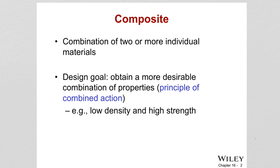Modern technologies require unusual combinations of conventional materials. The question is why? Because increasing the strength or stiffness of a material will decrease its impact strength. Even if we try to increase the strength of a material with different strengthening techniques, we are actually decreasing the impact strength. So in most cases it is not possible to achieve both increased strength and increased impact strength at the same time.